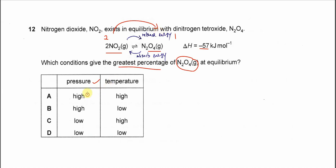This means when we increase the pressure—high pressure—the equilibrium will shift to the right and form more N2O4. So the percentage of N2O4 will increase.